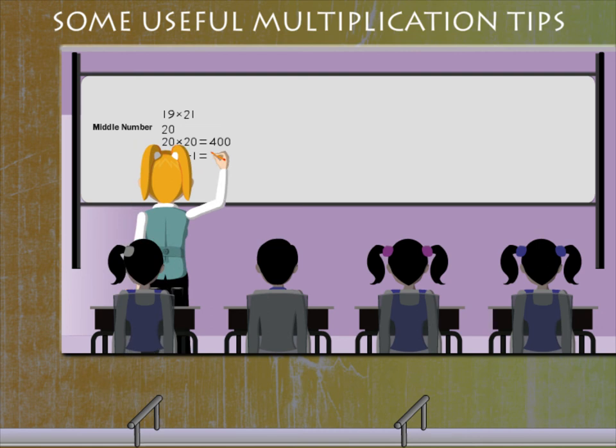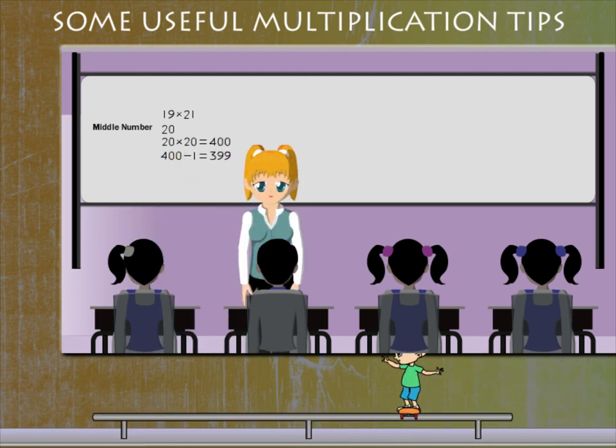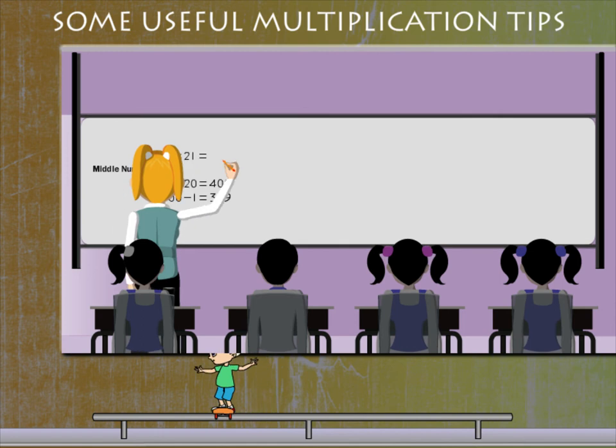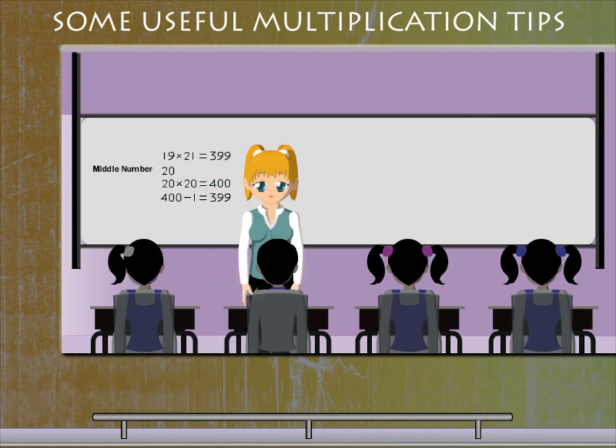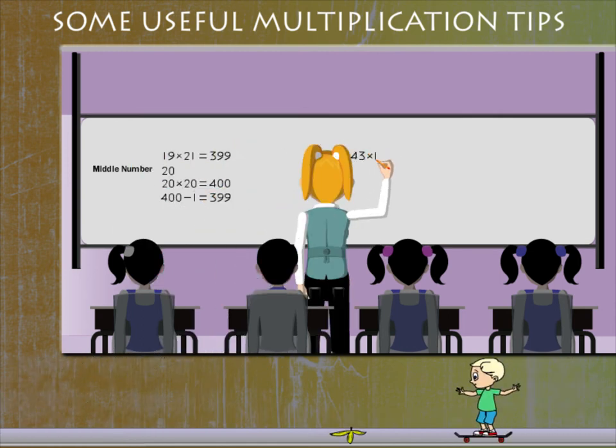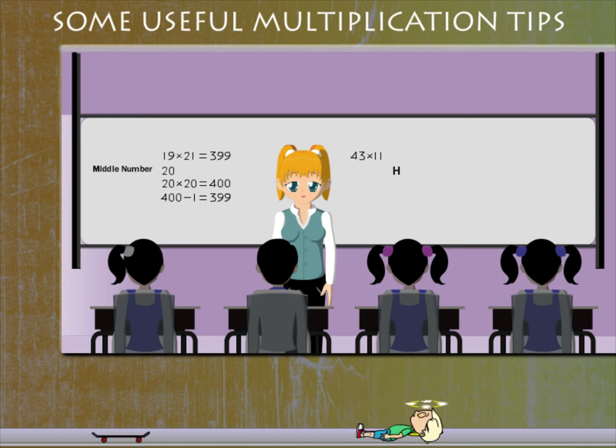one and you get 399. So 19 into 21 is 399. Next question: 43 into 11 is how much? As there